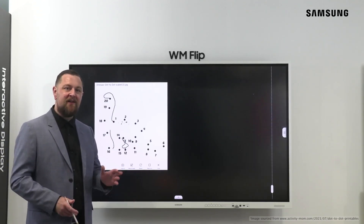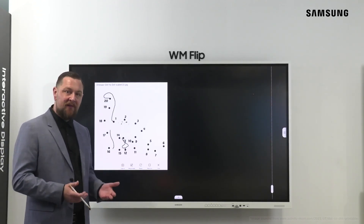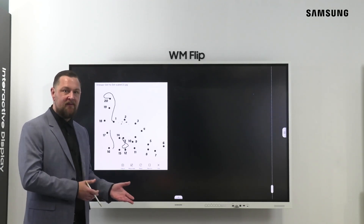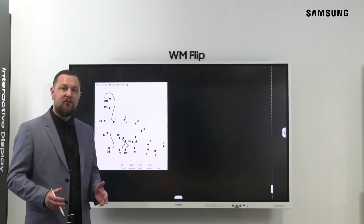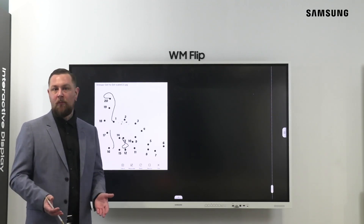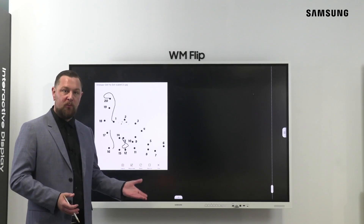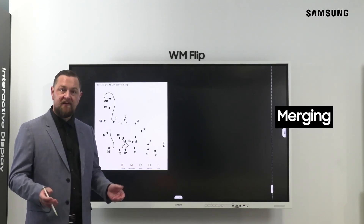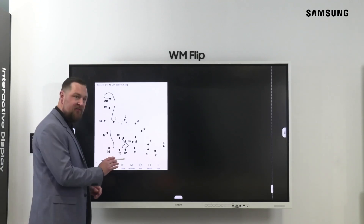In this example, we are preparing a dot-to-dot challenge which will compete student against student. To do this, we need to replicate the original image to make a second copy. We need to use the capture tool so we can make a copy of what we're doing and paste it somewhere else on the board. This is called merging.